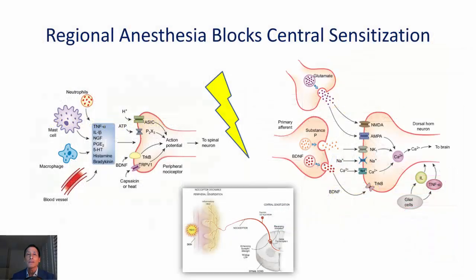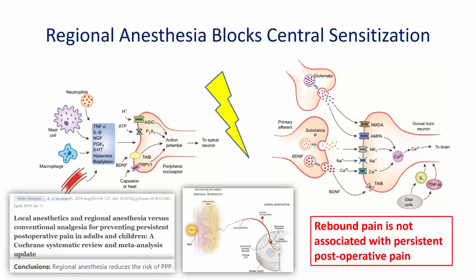If anything, regional anesthesia may reduce pathological hyperalgesia by blocking the transmission of nociceptive impulses to the dorsal horn of the spinal cord, thus inhibiting the development of central sensitization. And this may account for the fact that, to date, there is no demonstrable association between rebound pain after regional anesthesia and persistent postoperative pain — and it may in fact reduce the risk of this.